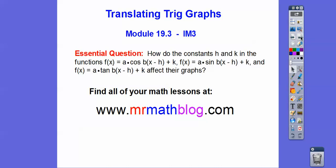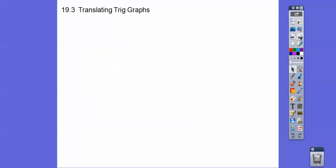So how do the constants h and k in the functions f(x) = a·cos(b(x − h)) + k and f(x) = a·sin(b(x − h)) + k affect their graphs? Now in the last lesson, or maybe two lessons ago, this was our k — I'm going to change it to b, and I did change it to b. So I'm teaching it with b, but the video I put on, I said this was k. We'll talk about that as soon as we get to it. So, translating.